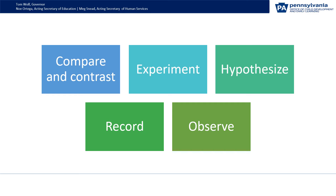Experiment: younger children can experiment by mixing paint colors, older children growing mold on bread. Hypothesize is when you guess what's going to happen. Older children can draw or write what they think will happen.